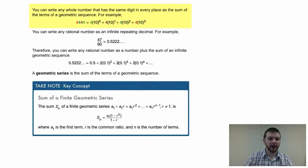You can write any whole number that has the same digit in every place as the sum of the terms of a geometric sequence. For example, 4,444 equals 4 times 10 to the 0, providing the 4 in the ones place, plus 4 times 10 to the 1st power, providing the 4 in the tens place, plus 4 times 10 squared, the hundreds place, plus 4 times 10 to the 3rd power, the thousands place.